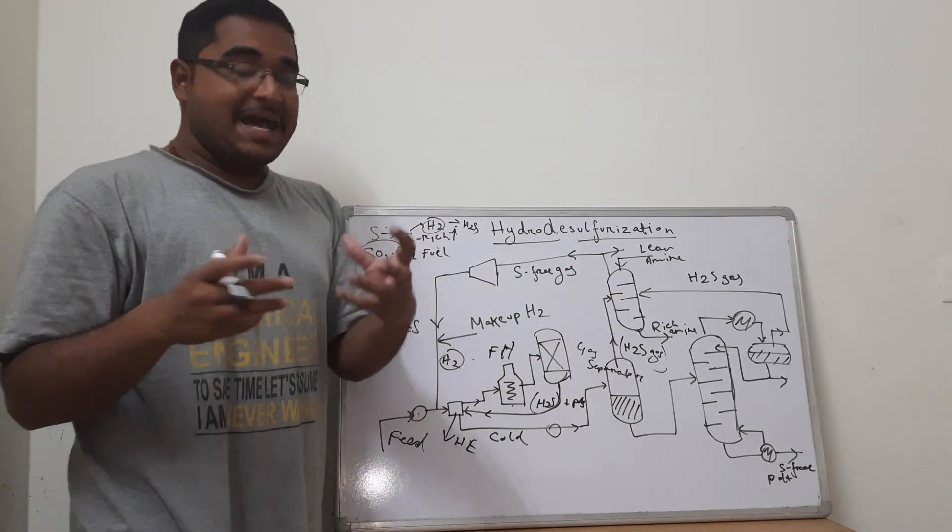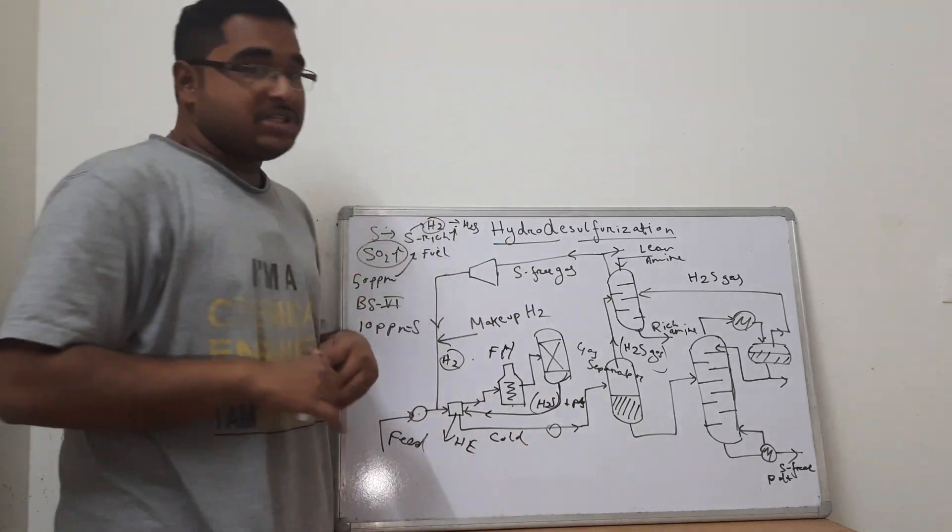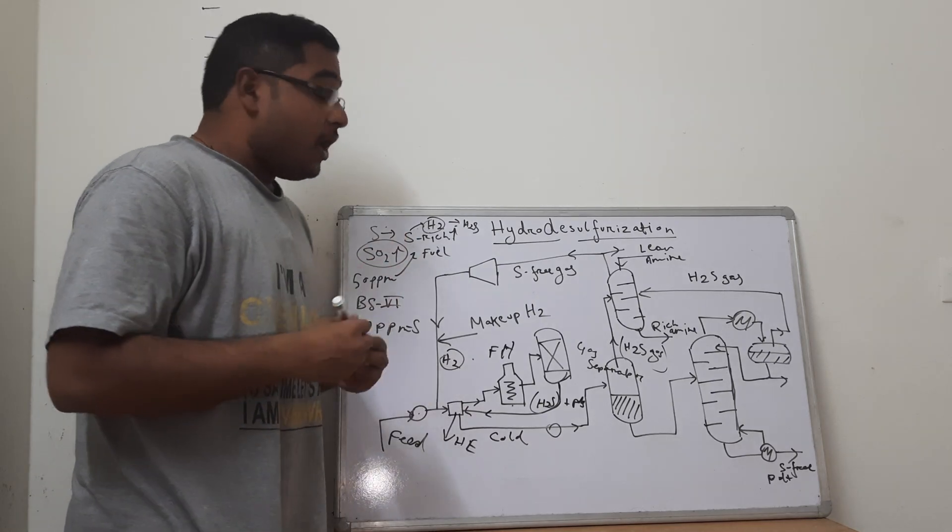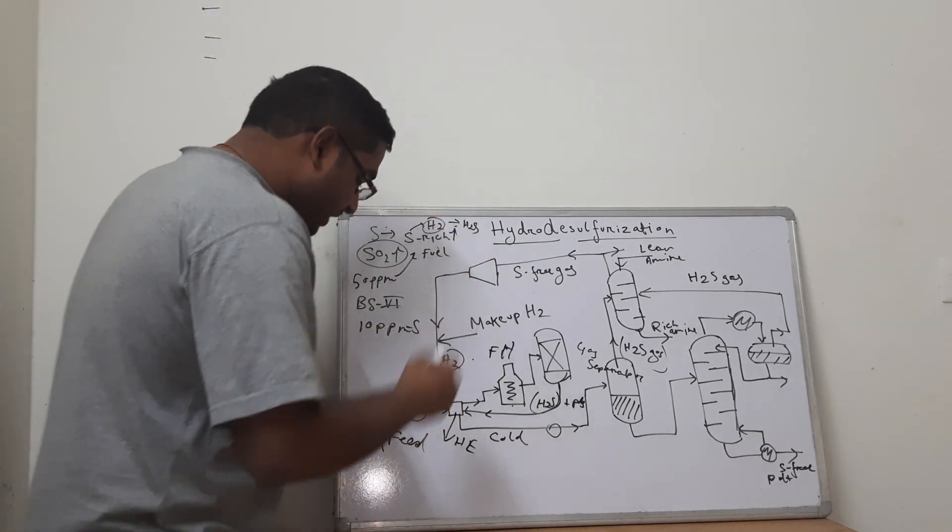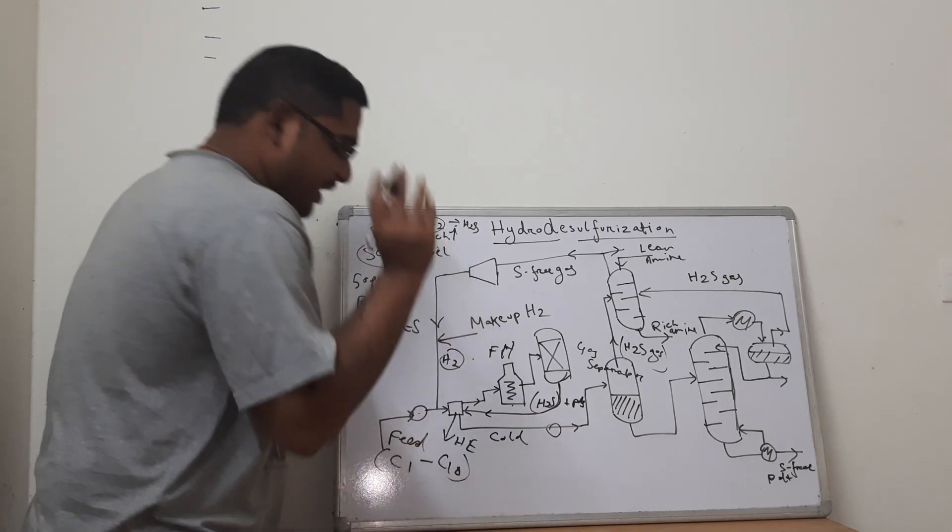Now, this H2S gas primarily cannot be sent back into the system because it is also rich in sulfur. So we need to entrap it somehow so that whatever gases is getting, supposedly this feedstock contains C1 to C10.